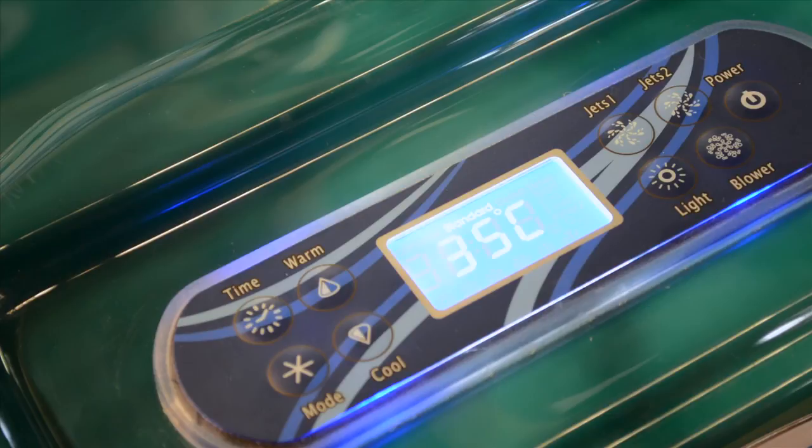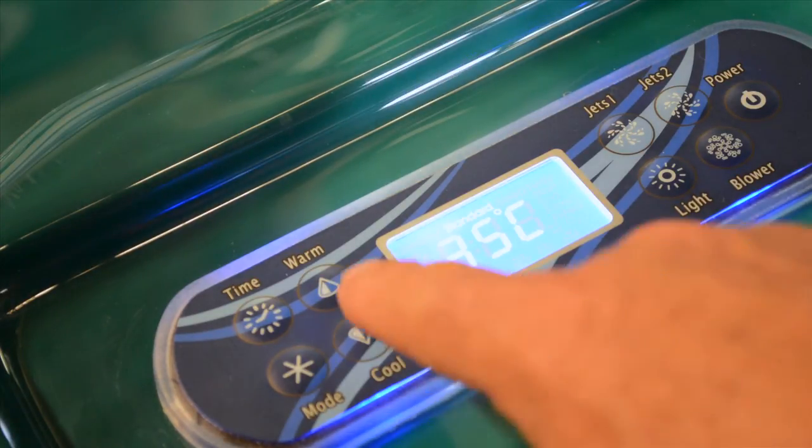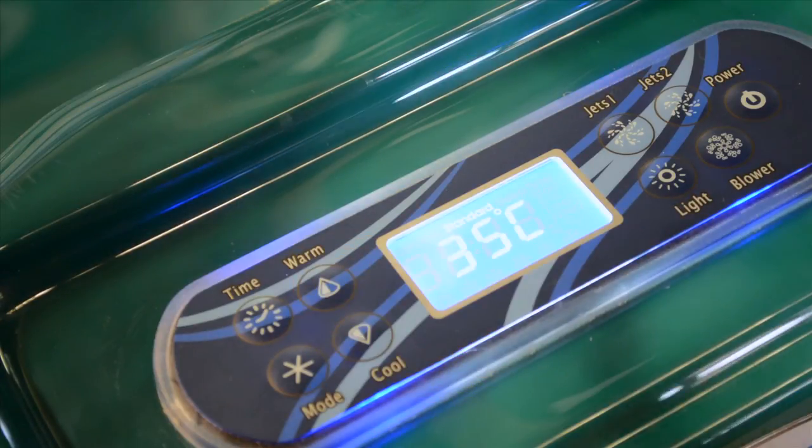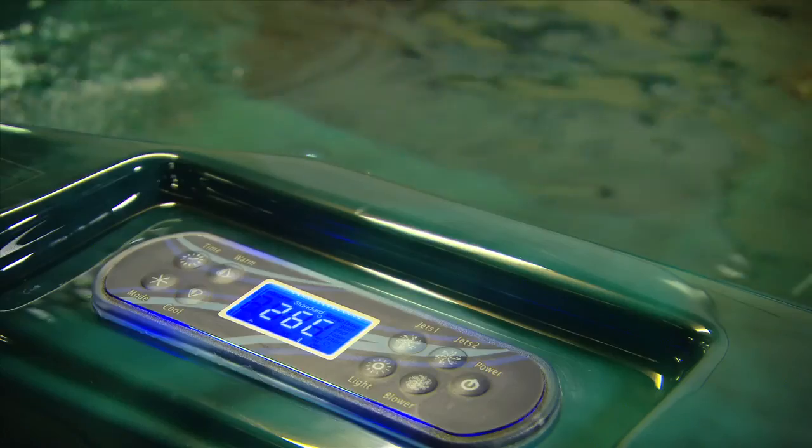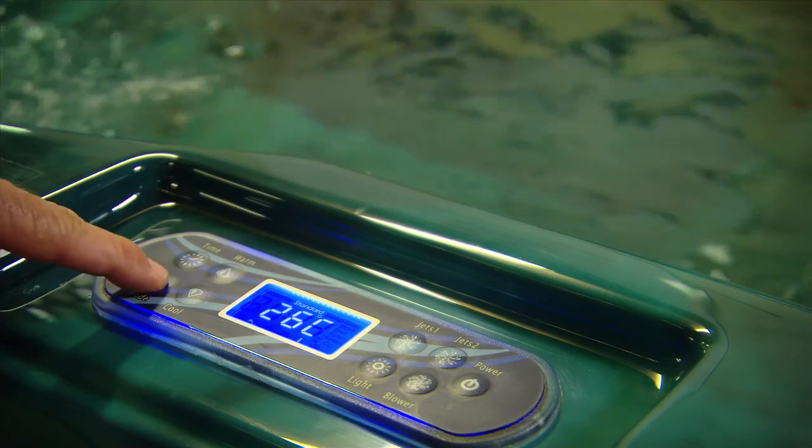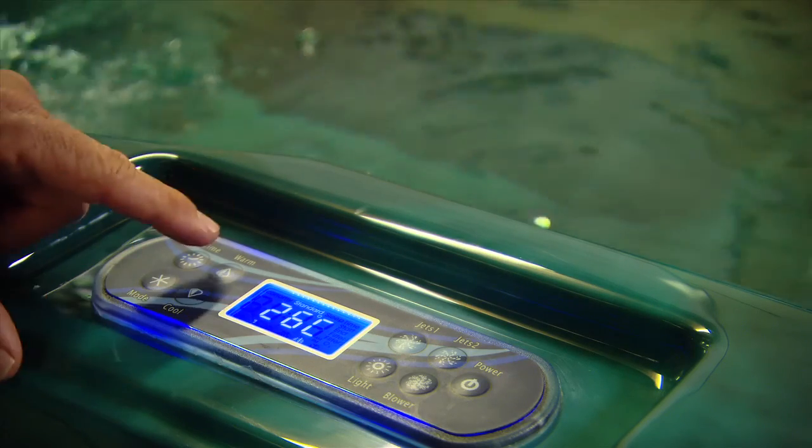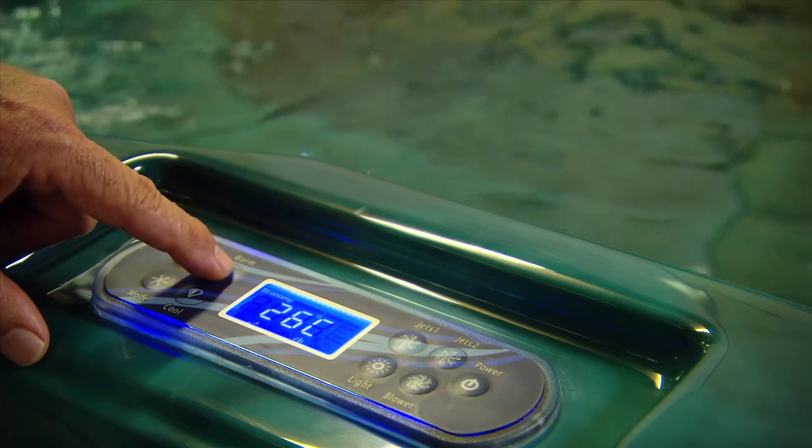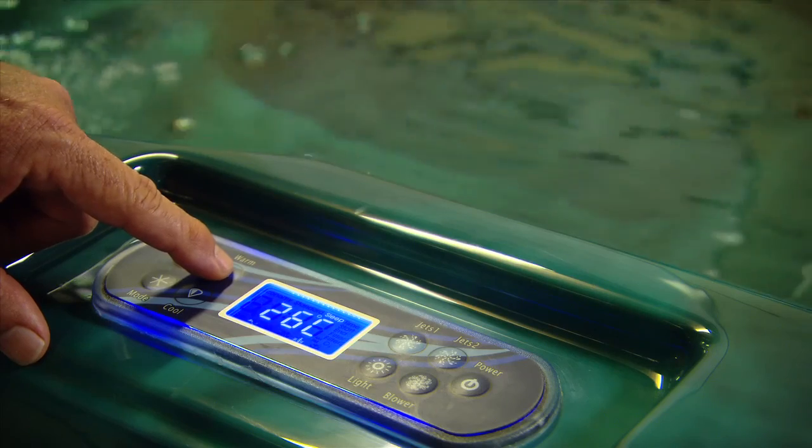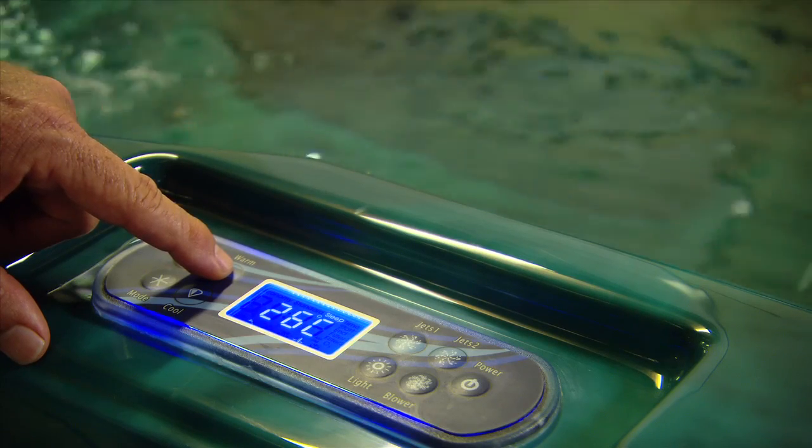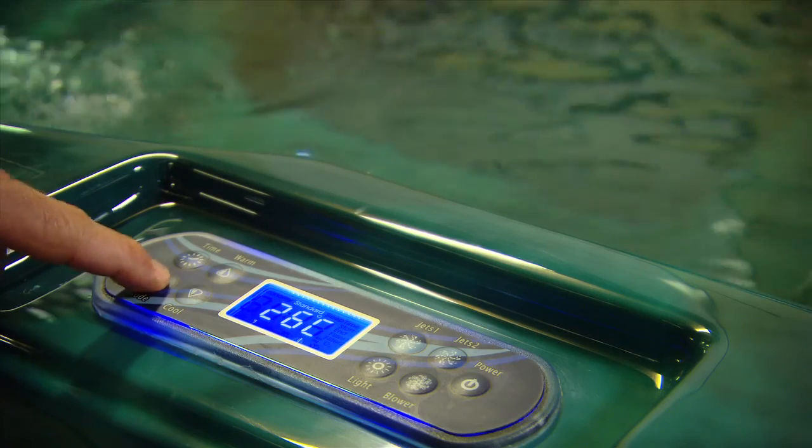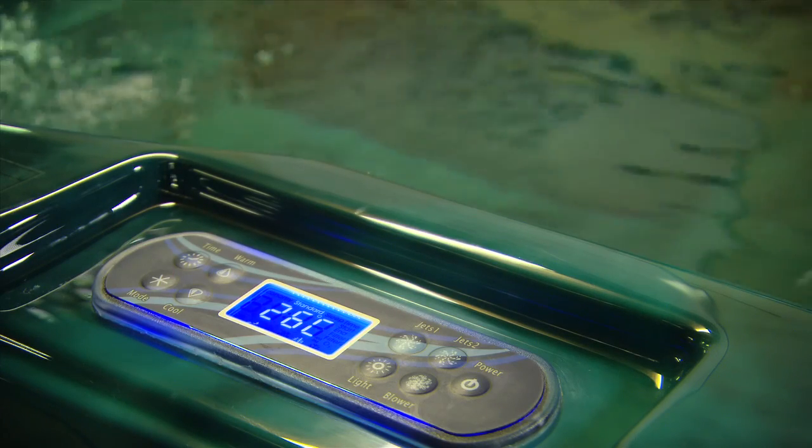The mode button will allow you to choose various modes. To move between modes, use the warm or cool buttons. Then press the mode button again to set that mode. Standard mode allows the spa to heat whenever it wants to always maintain your set temperature. Economy mode only allows the spa to heat during filtration times. And then there's the sleep mode, where the spa will filter but not heat. After you've selected the mode you want, push the mode button again to lock in your choice.